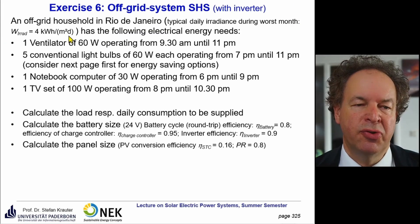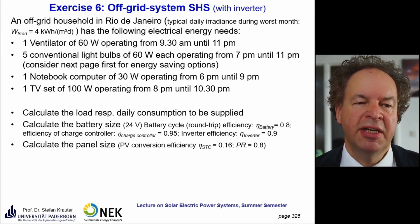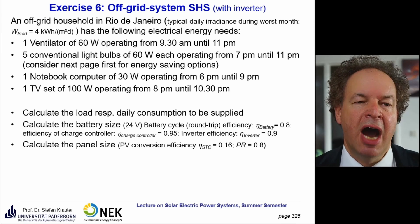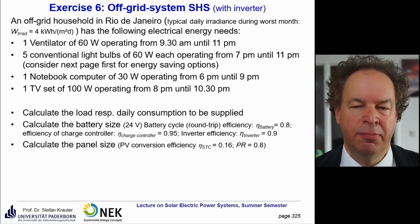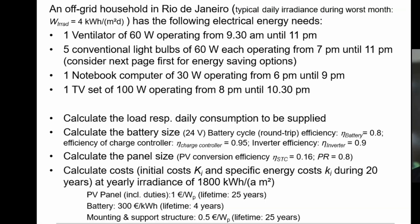Compared to Germany, good locations have 1 kilowatt-hour per square meter per day, and really bad locations only 0.5. Finally, we calculate the cost of such a system: first the investment costs (the initial costs, capital K), and then the specific costs (small k) over 20 years.